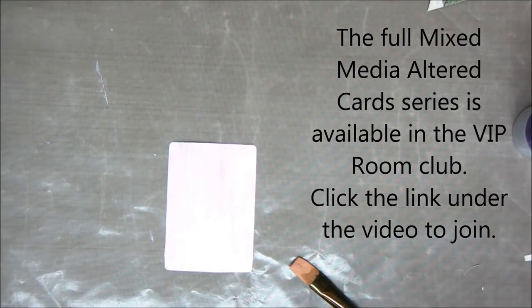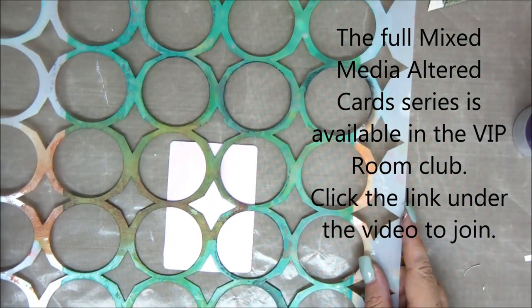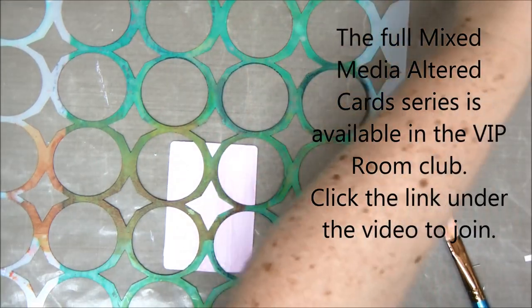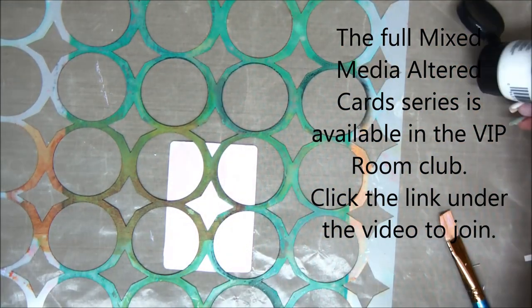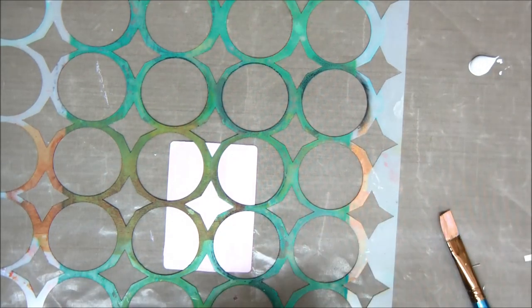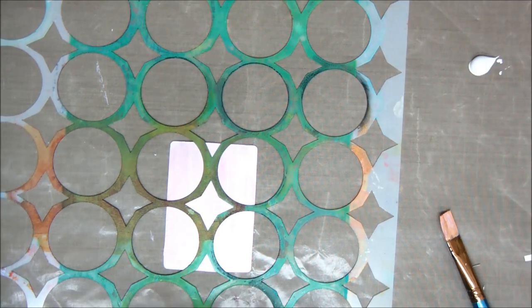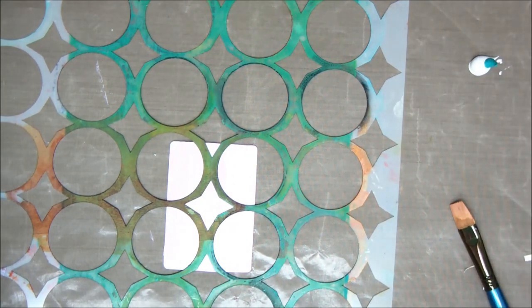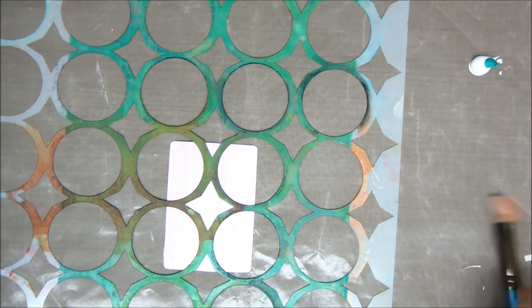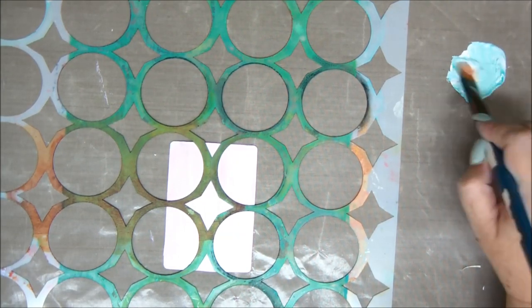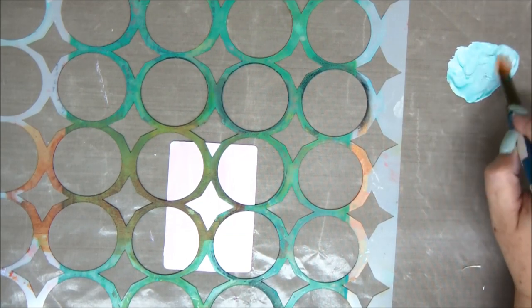After this is dry, dry it with your heat tool. I'm going to stencil this with some teal. Again, I'm going to create a very pale teal by mixing it with some white paint. I want to make sure it's not too dark, so I'm adding a little tiny drop of teal. I think that's good.